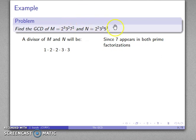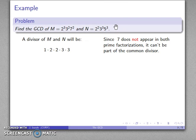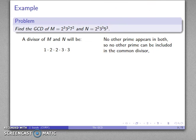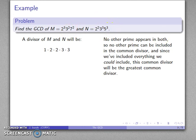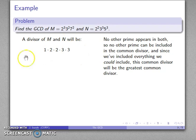Since 7 does not appear in both prime factorizations, it can't be part of the common divisor — it divides m but does not divide n. There's no other prime that appears in both; 5 doesn't appear in m, so 5 can't be a common divisor either. Since we've included everything that could be a divisor of both and nothing that couldn't be, the greatest common divisor is going to be 1 times 2 times 2 times 3 times 3.